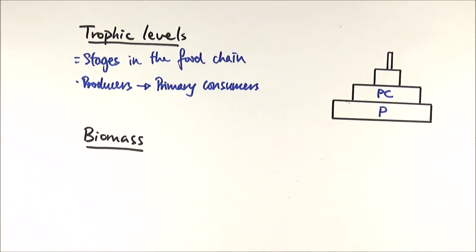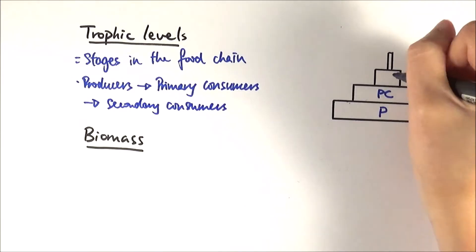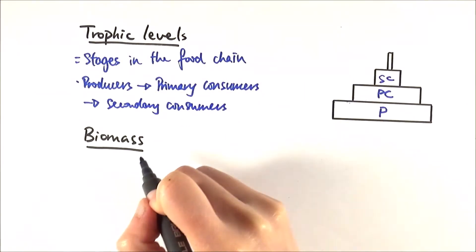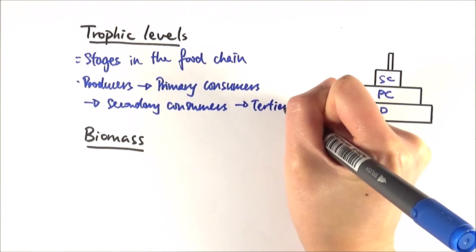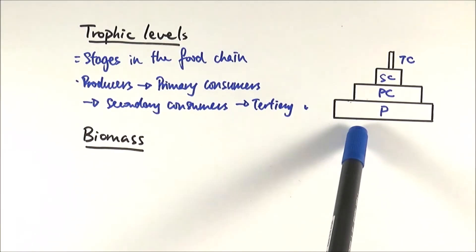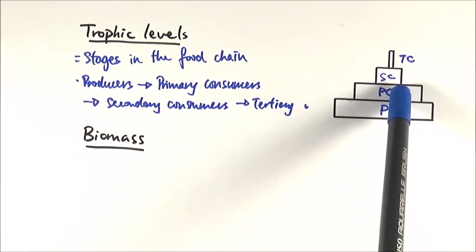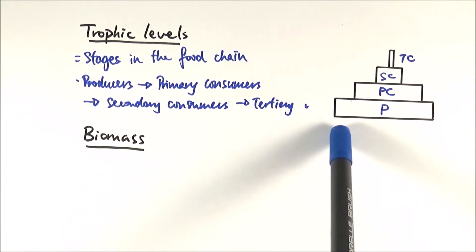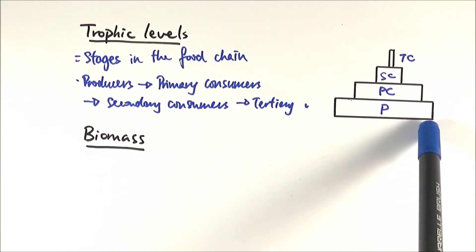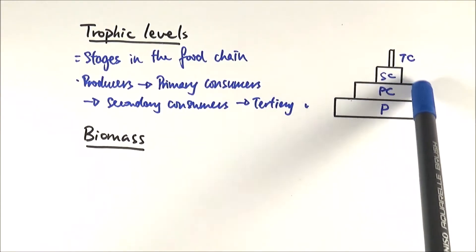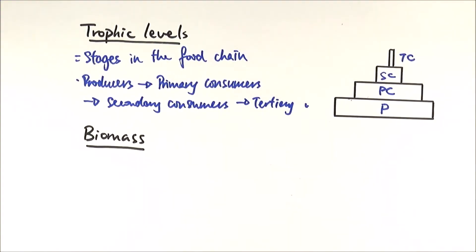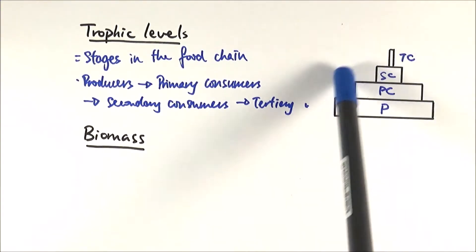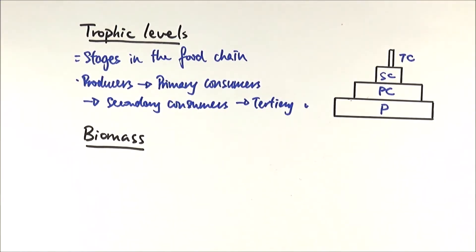Some of the energy gets transferred into the primary consumers. The primary consumers are then eaten by secondary consumers higher up the food chain, and the secondary consumers are eaten by tertiary consumers. A food chain can be represented by a pyramid showing the number of organisms at each trophic level — most of the time we have a lot of producers, and fewer organisms as we go up.